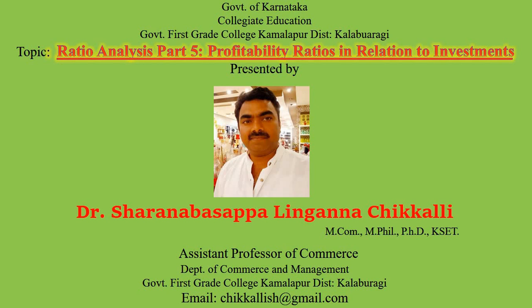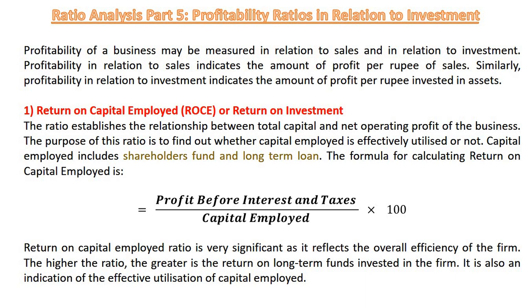I request you to like this video and subscribe my YouTube channel for further commerce and management topics related videos. Profitability of a business may be measured in relation to sales and in relation to investment. Profitability in relation to sales indicates the amount of profit per rupee of sales. Similarly, profitability in relation to investments indicates the amount of profit per rupee invested in assets.